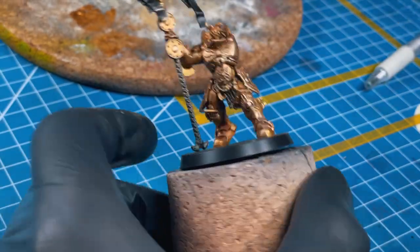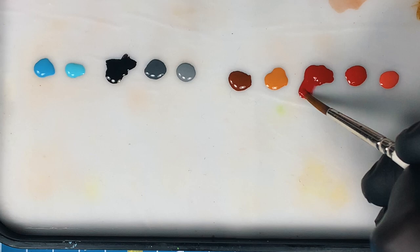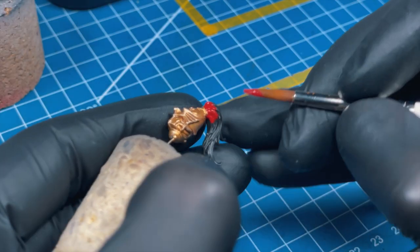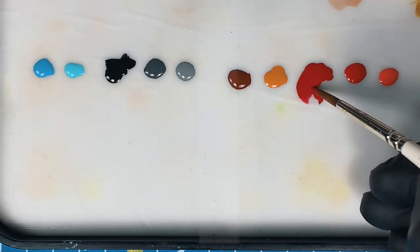Now we're painting the second main color on the Custodes—the red ponytail. Grab your Mephiston Red and give it a good base coat on the hair, on the Aquila, and also on your helmet.